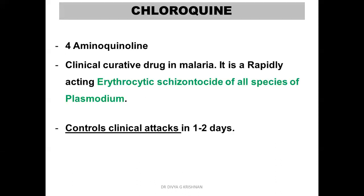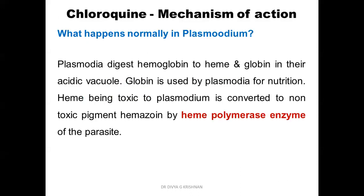Now we discuss the first drug: chloroquine. It is a 4-aminoquinoline and a clinical curative drug in malaria. It rapidly acts on the erythrocytic schizonts of all species of Plasmodium and can control the clinical attack in one to two days. It is the first-line drug — any person suspected of malaria is given chloroquine first because it can control clinical attacks in one to two days.